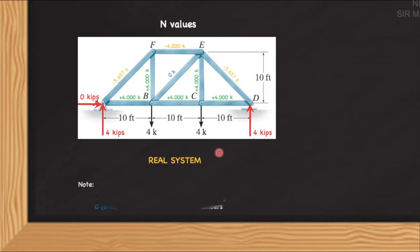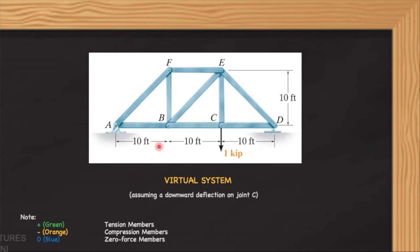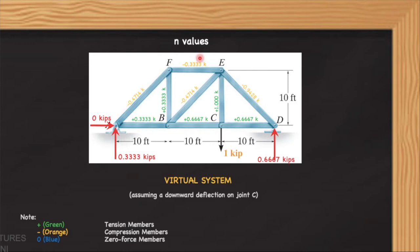Note that the positive values, colored green, are tension members. The negative values, colored orange, are compression members. The blue colored labels are zero force members. Let us next analyze the virtual truss by the method of joints. We compute the reactions using equilibrium equations, and then by the method of joints, we compute the member forces — these are the lowercase n values that we will substitute into our formula.